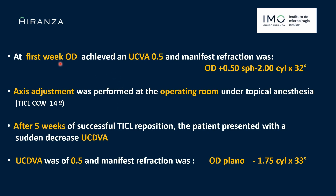What happened? In the first week, the patient presented with visual acuity of 0.5 and a residual astigmatism of 2 diopters at 32 degrees. A new repositioning surgery was proposed under topical anesthesia, which was successful for five weeks. Then, again, a sudden spontaneous drop in visual acuity occurred. Vision was 0.5 and refraction was nearly 2 diopters at 33 degrees — very similar to the first event.